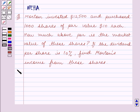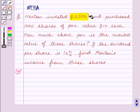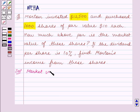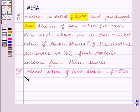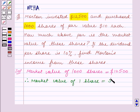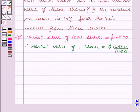Let's start the solution now. We are given that Morton invested $12,500 and purchased 1,000 shares. So the market value of 1,000 shares is equal to $12,500. Therefore, the market value of one share is equal to $12,500 divided by 1,000. These zeros get cancelled, so this is equal to $12.50.